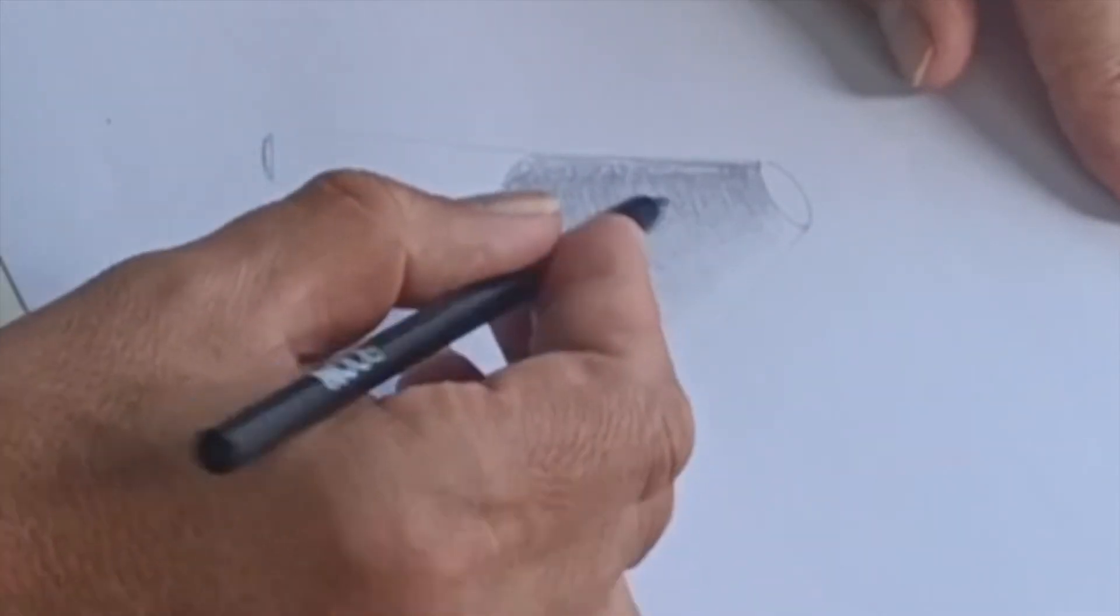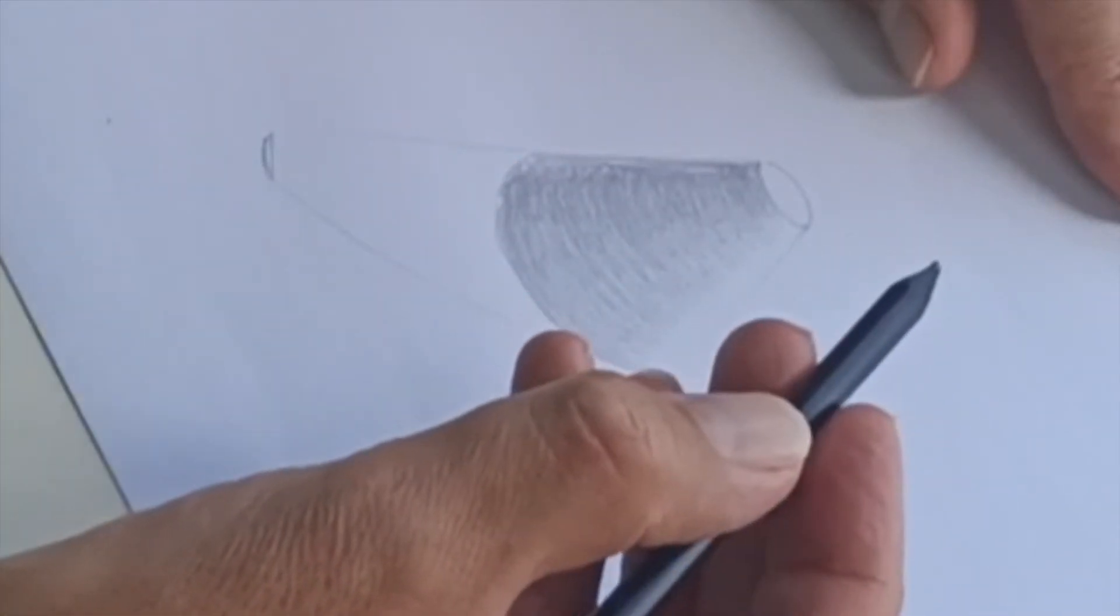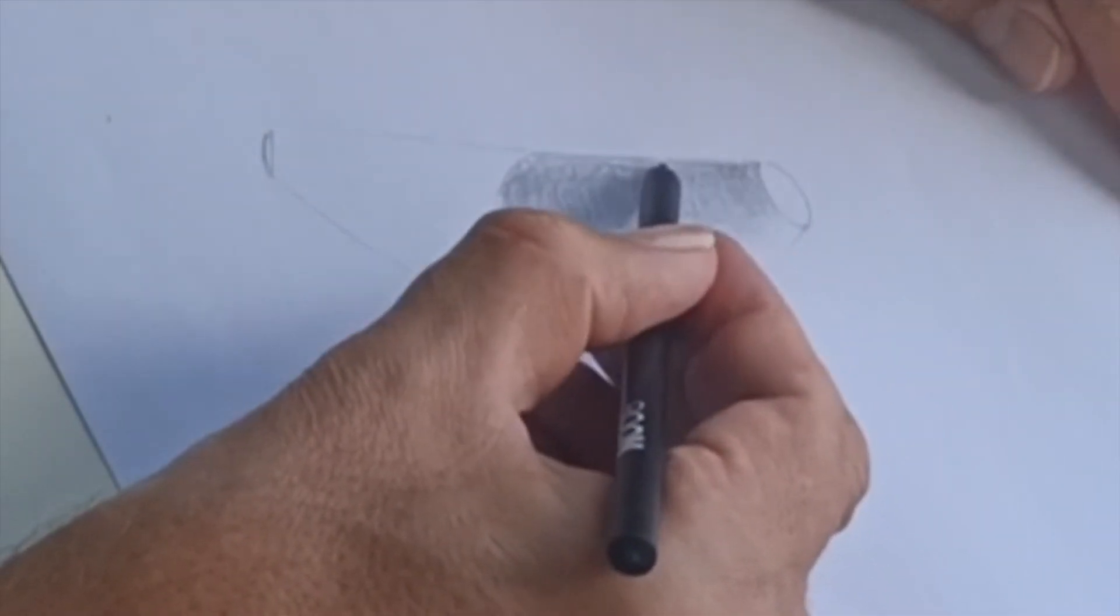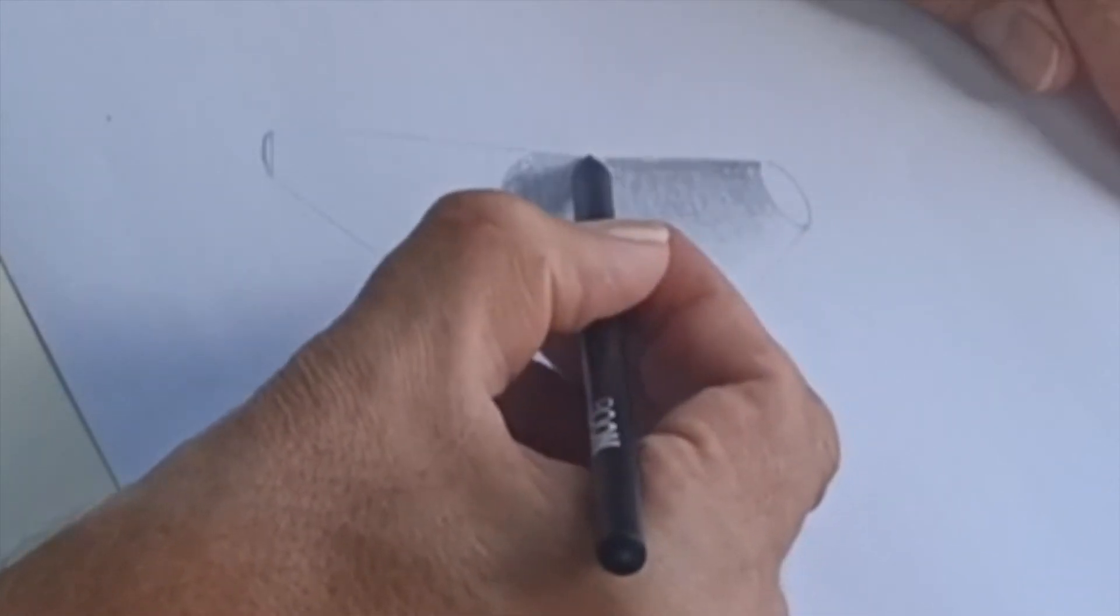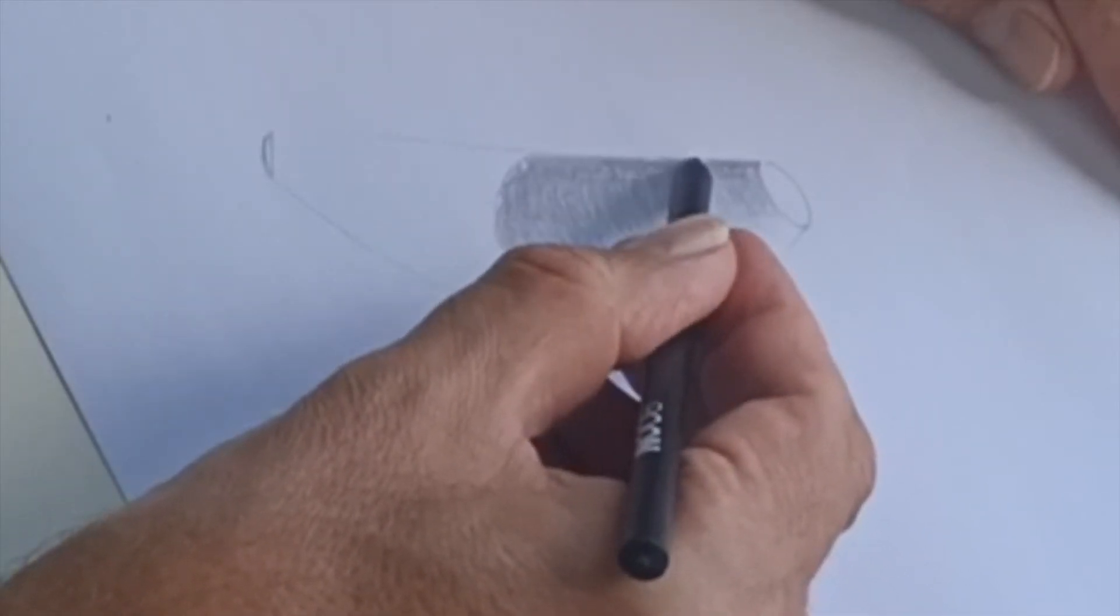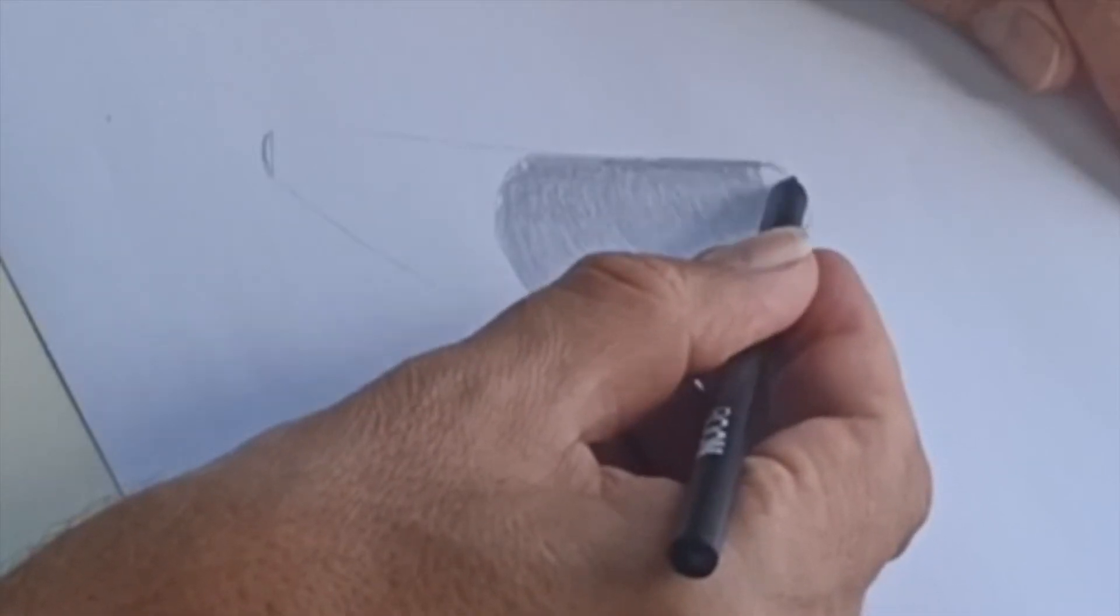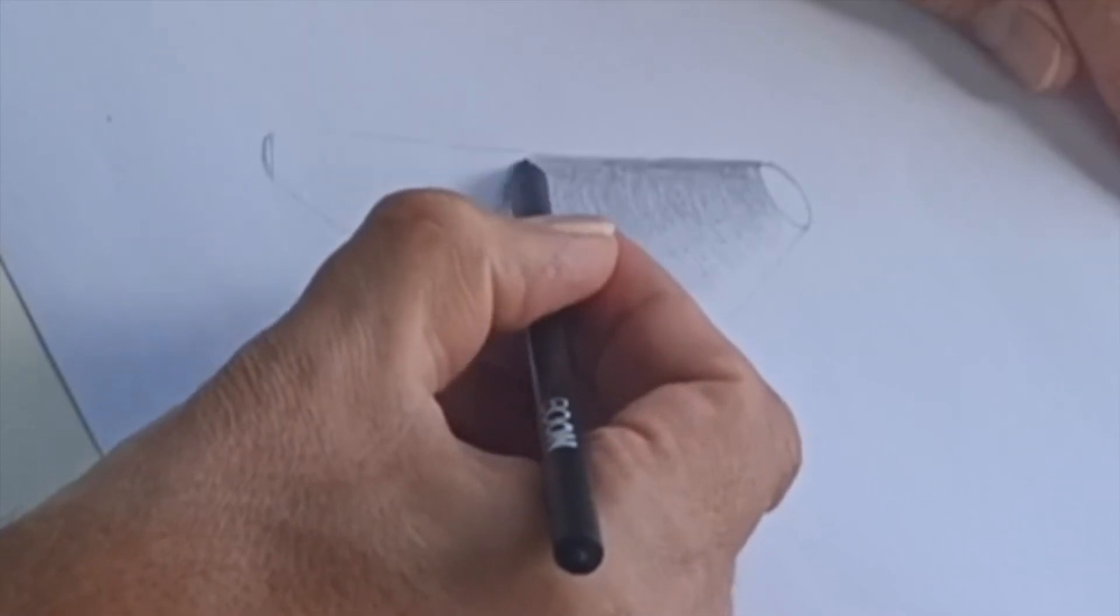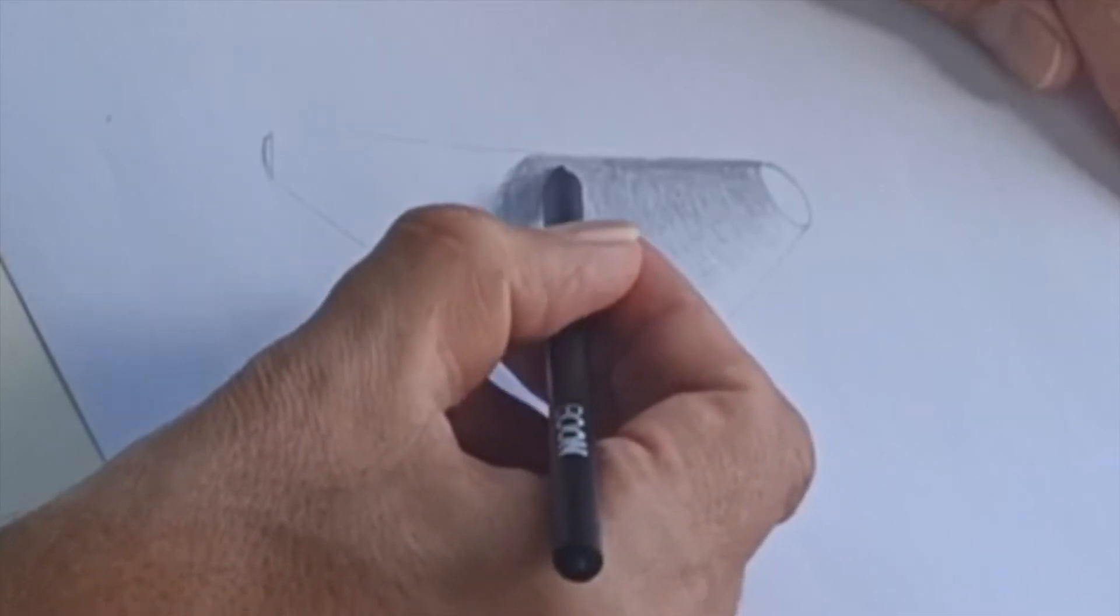Now if I turn my lead around, turn it around like this, the edge of the pencil here will be sharper. And you'll see that when I press down on the paper. It's good when you want to add some detail parts to your drawing. Just turn your pencil around.